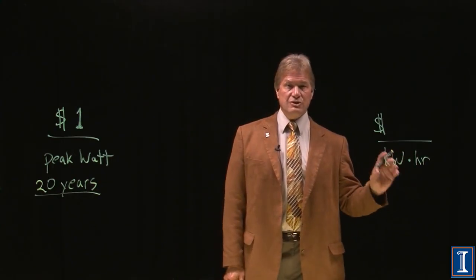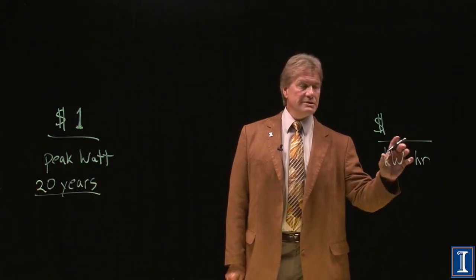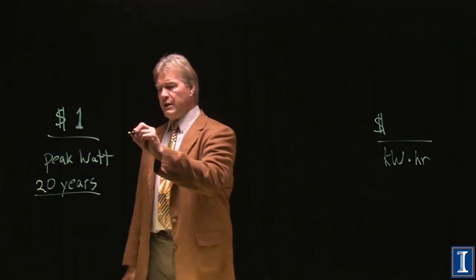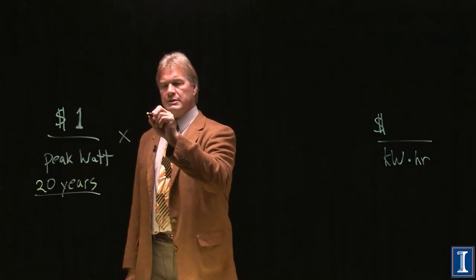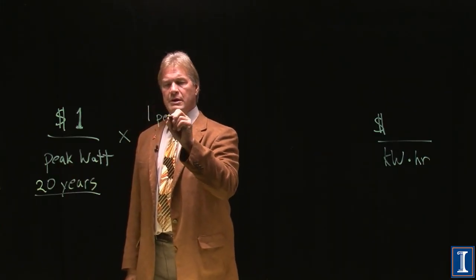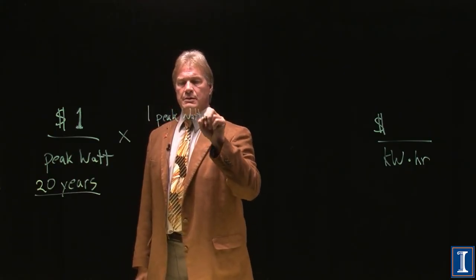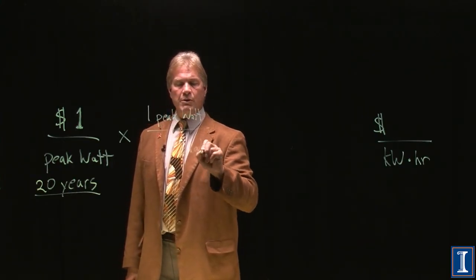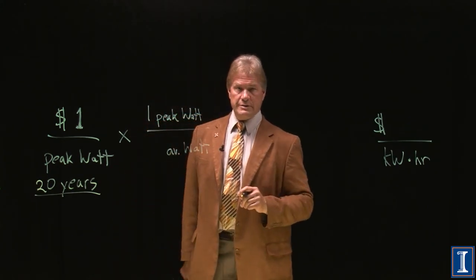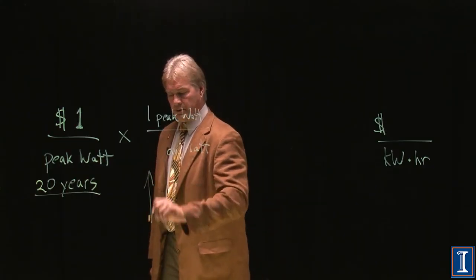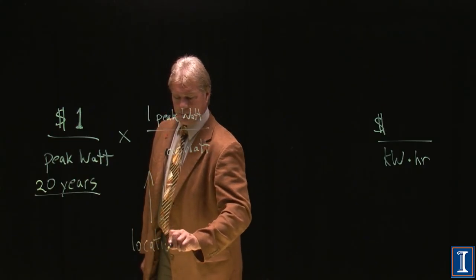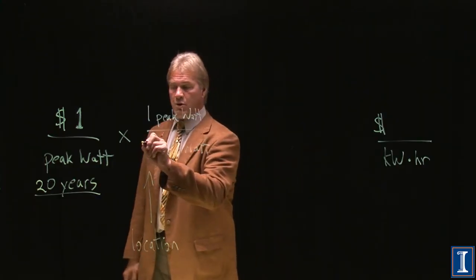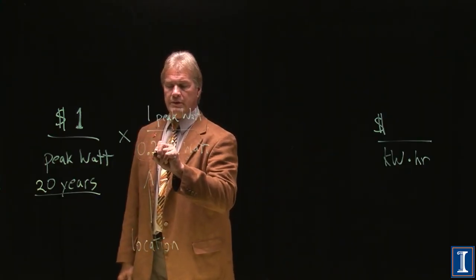A watt second is a joule, so this is some number of joules. What we have to do is we need to convert this peak watt, one peak watt, to an average watt, a plain old normal, hey, can I make electricity out of this? And this number right here depends on your location. If you live in a sunny desert, this number might be 0.4. If I live here in Illinois, it's 0.2.